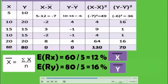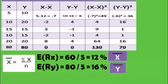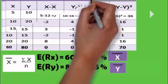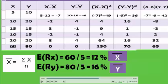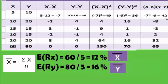The last step is to calculate the covariance, which is the joint deviation of X around X-bar and Y around Y-bar. For example, minus 7 multiplied by minus 6 equals plus 42, and minus 2 multiplied by plus 4 equals minus 8.